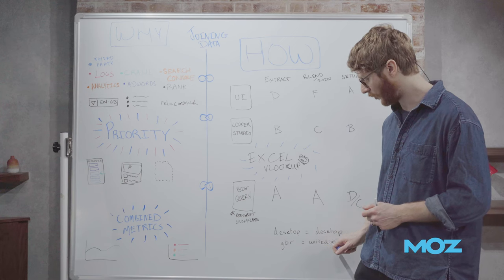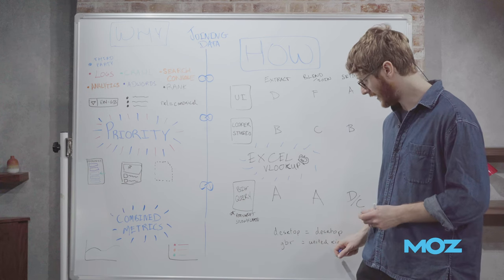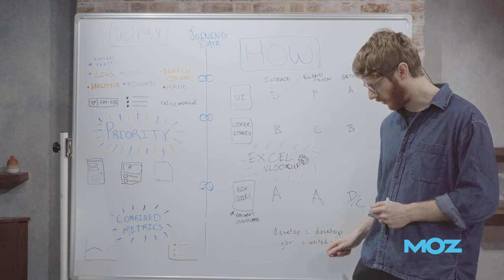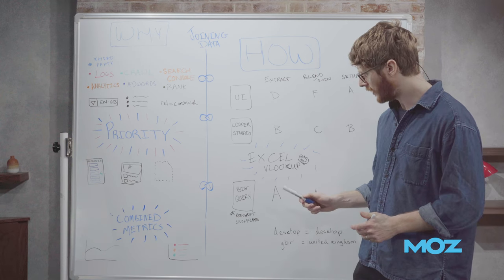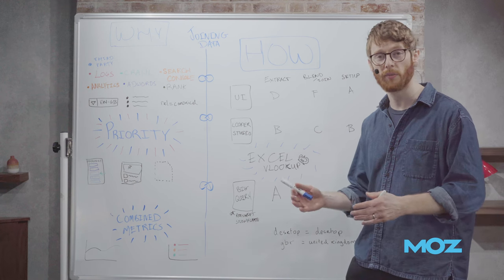Search Console will give you country exported in a three-letter country code. By default, if you have just set up your report with country, as many people do on Analytics, they will have the name of the country. Obviously, these are not going to perfectly line up and your join won't work.